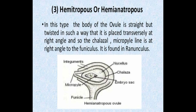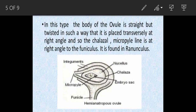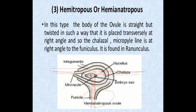Third is the hemitropous ovule, also called hemianatropous ovule. In this type there is a bend — the funicle is on the downside, and the micropylar end and chalazal end are present at a right angle to the funicle. This type is also called transverse ovule, and the example is Ranunculus.